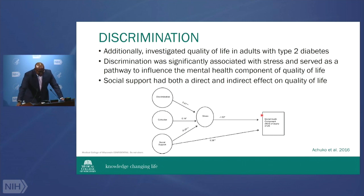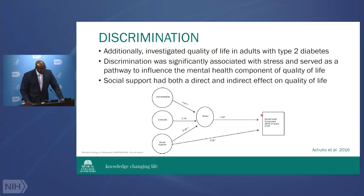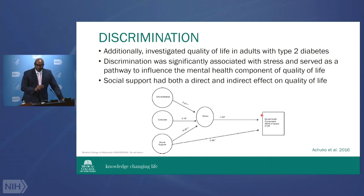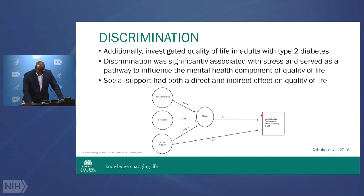A student who's now in medical school looked at mental health. We found that stress actually led to poor mental health — not just physical health — but social support mitigated and buffered some of that effect. This again showed that in people with diabetes, these social factors actually played a role.